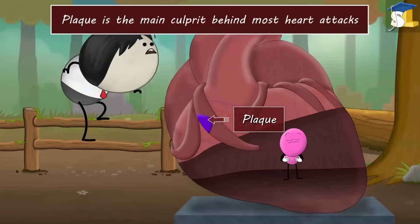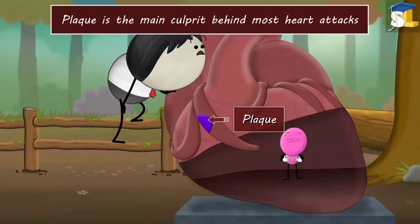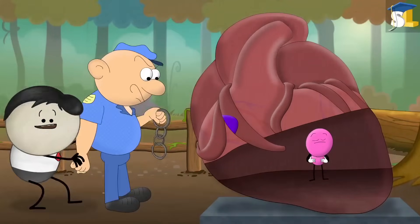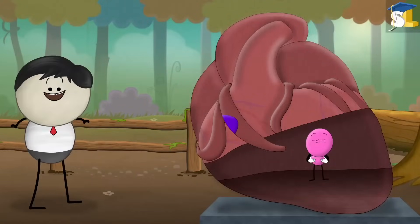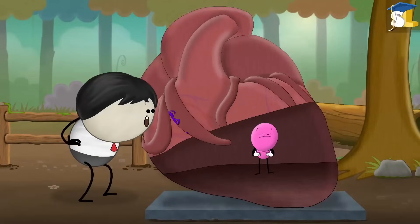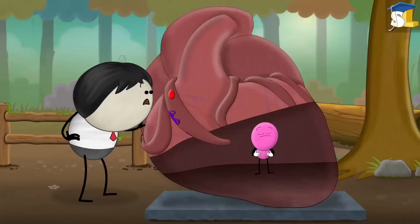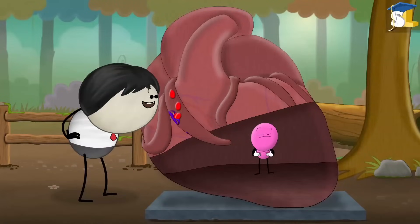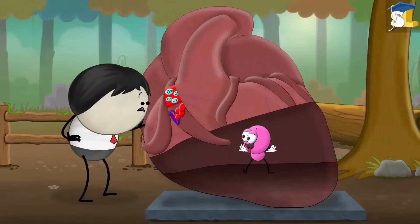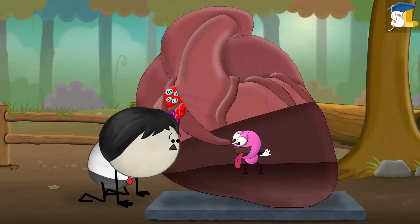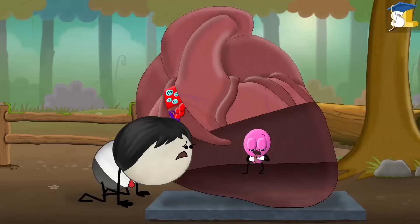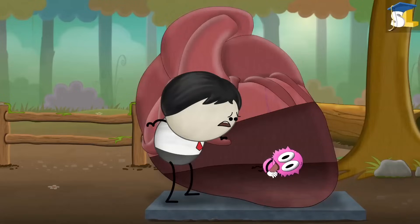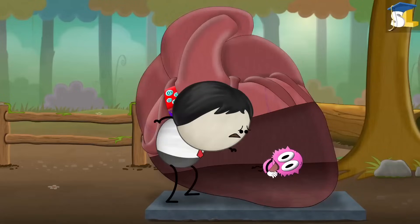Plaque is the main culprit behind most heart attacks. When plaque ruptures, a blood clot forms around it causing the artery to get completely blocked. The blood then cannot pass further to that part of the heart. Thus, due to lack of oxygen, the muscle cells in that part die. This condition is called a heart attack.